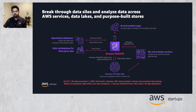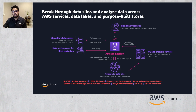Amazon Redshift ML uses Amazon SageMaker Autopilot to build supervised machine learning models automatically, and then uses Amazon SageMaker Neo to optimize the model for deploying into your Amazon Redshift clusters and allows you to make predictions using SQL functions.